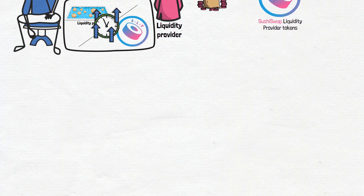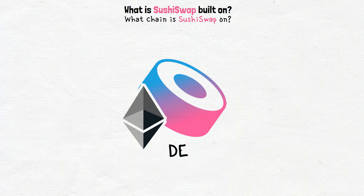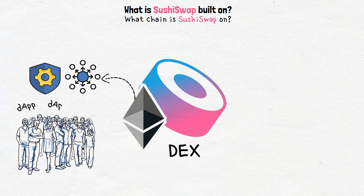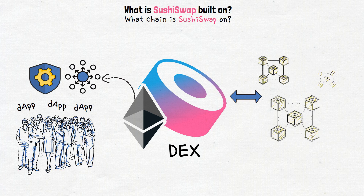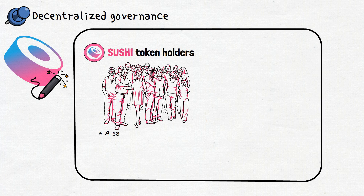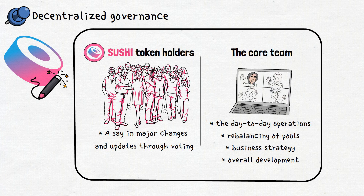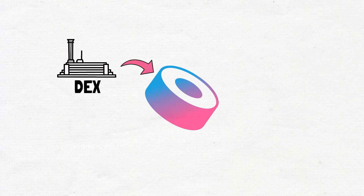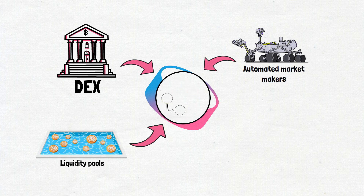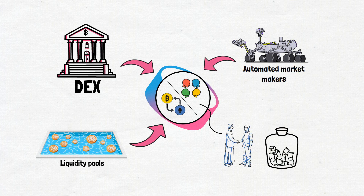Now, let's get to another common question: what is SushiSwap built on, or in other words, what chain is SushiSwap on? Sushi is an Ethereum-based DEX. The Ethereum network provides a secure and decentralized backdrop, allowing everyone to engage in the world of DeFi through different dApps. Still, Sushi has expanded its operations to multiple chains. It's also worth noting Sushi's decentralized governance — the entire platform gives Sushi token holders a say in major changes through voting, ensuring a democratic process, while day-to-day operations and development are handled by the core team. In a nutshell, SushiSwap is a DEX using automated market makers and liquidity pools — a community where you can contribute, earn, and explore decentralized finance.